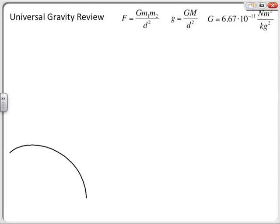Let's start off a problem where we're going to have a planet and I'm going to make up some numbers. I'm going to say that the radius of this planet is equal to 8.5 times 10 to the 6 meters, and the mass of the planet is equal to 1.1 times 10 to the 25 kilograms. Those numbers I just made up. I'm also going to look at a couple of objects on the surface of the planet.